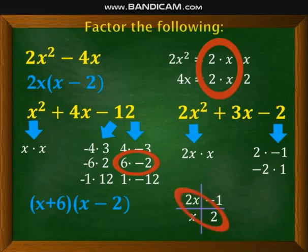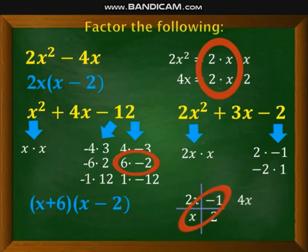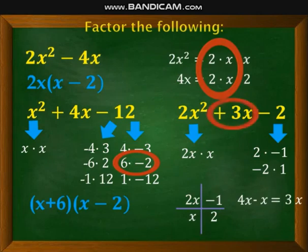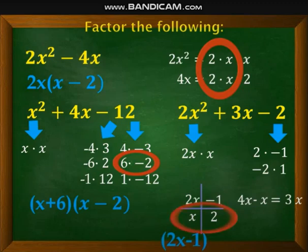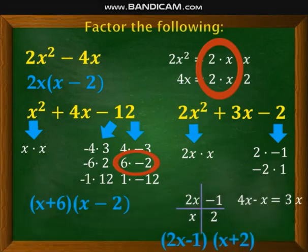Cross multiply to get the 3x. 2x times 2 is 4x, and x times -1 is -x. Since different signs, subtract them, 4 minus 1. This is positive 3x. Since we got the middle term, positive 3x, the factors are the two at the top of the quadrants, 2x - 1, and the two at the bottom of the quadrants, x + 2. If you want to check whether your factors are correct, use FOIL method, first outer inner last. If you got 2x² + 3x - 2, then your factors are correct.